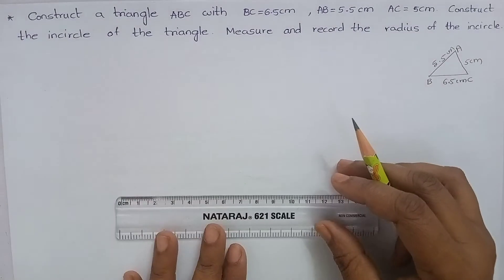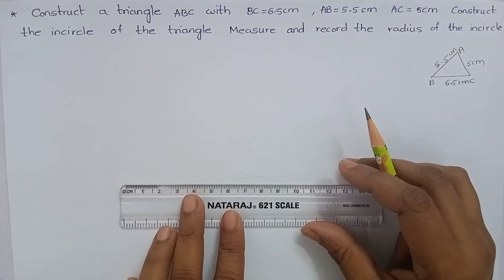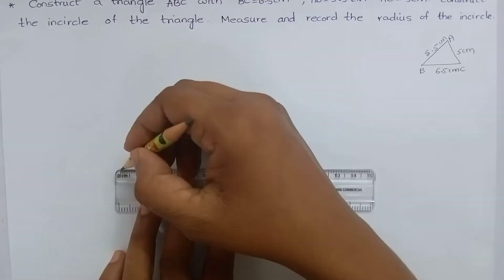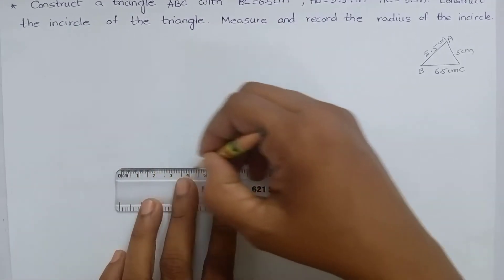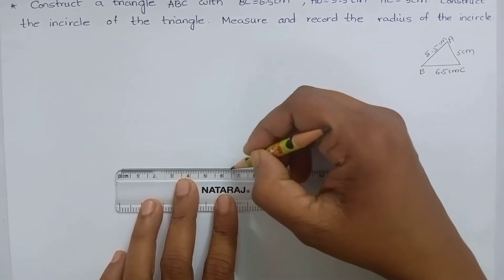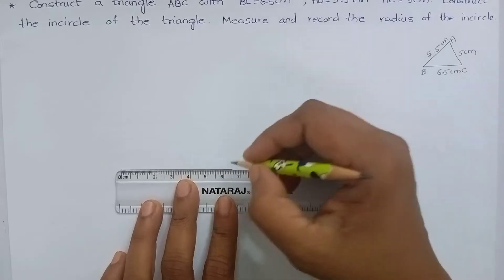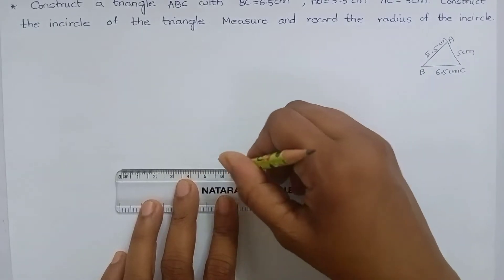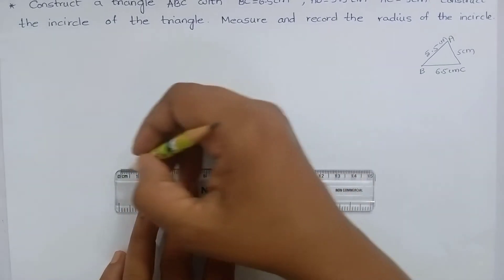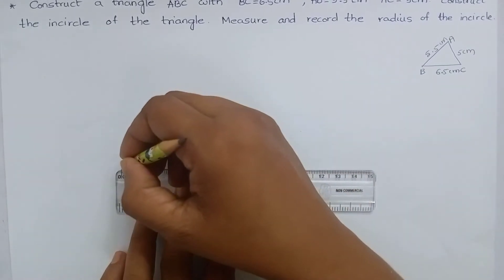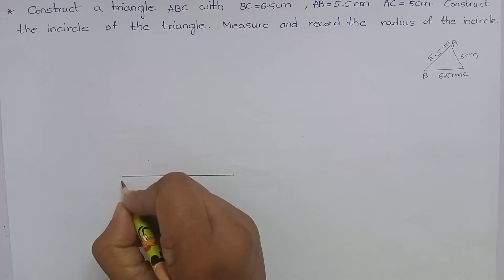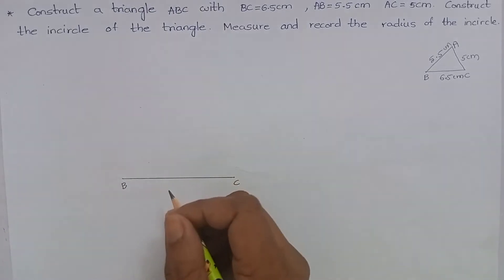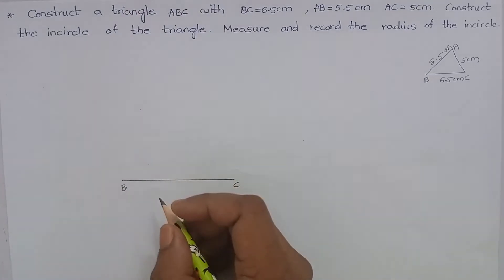Mark 6.5 cm using a ruler. Name this as BC. BC is 6.5 cm.